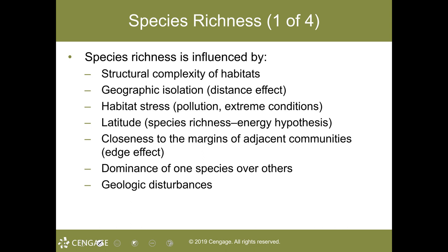The dominance of one species over others — if there are more ruderal or r-selected species in that area, they might very well outcompete other native plant or animal species. Finally, geologic disturbances can be a detrimental effect. Although these and other environmental factors have positive or negative effects on species richness, there are exceptions and variations in every explanation.